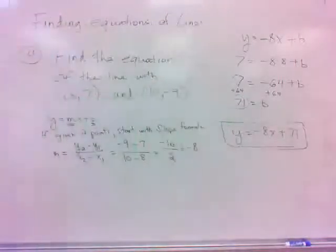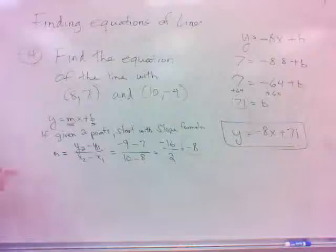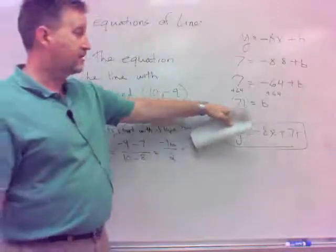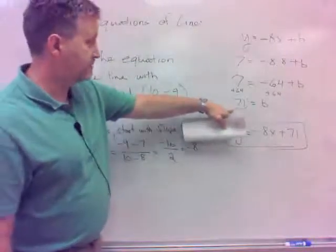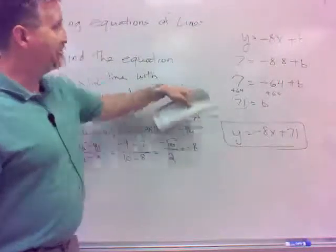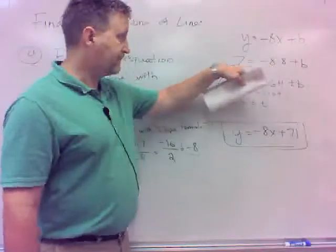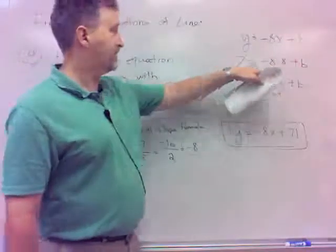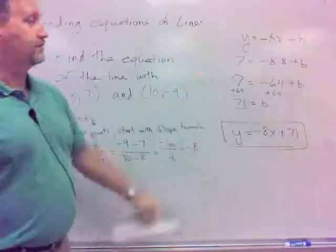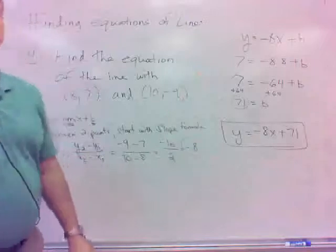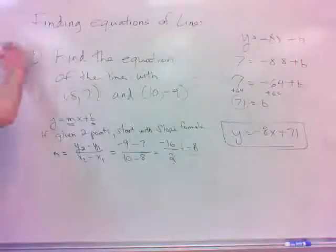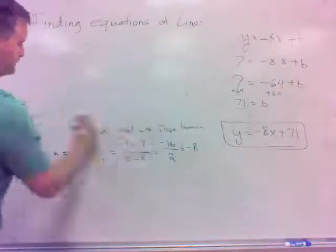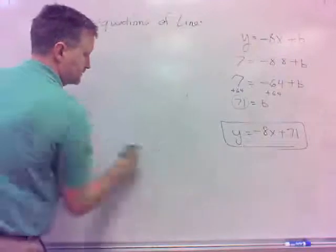It doesn't matter which one. We'd get the very same b. You can try it. If we did 10 negative 9 instead of 8, 7, you'd still get 71.